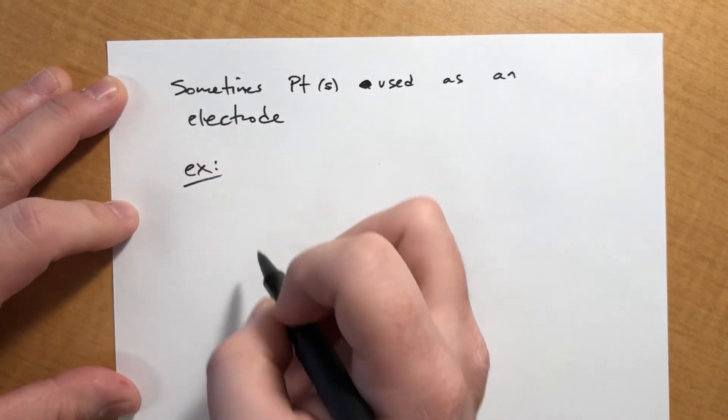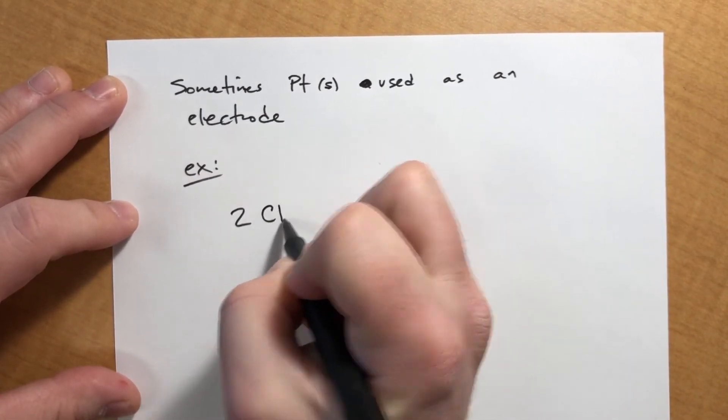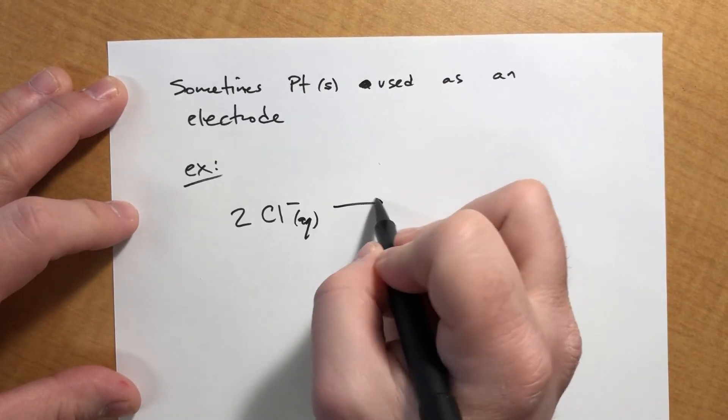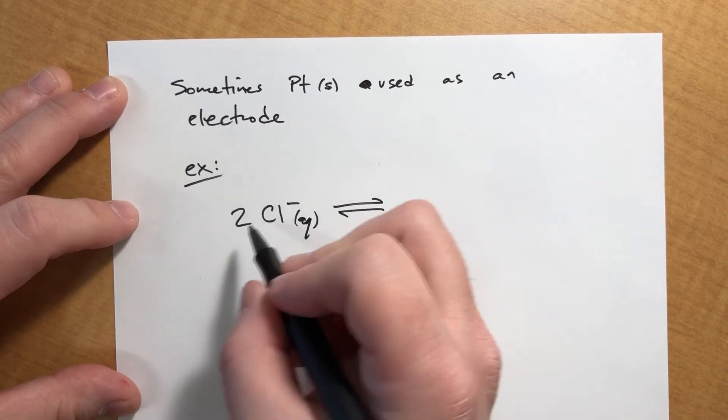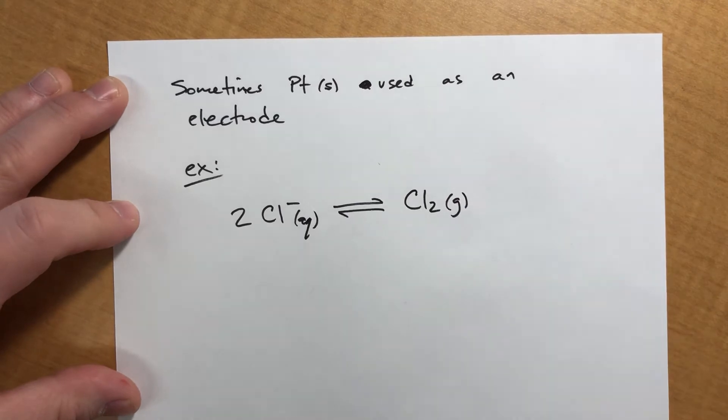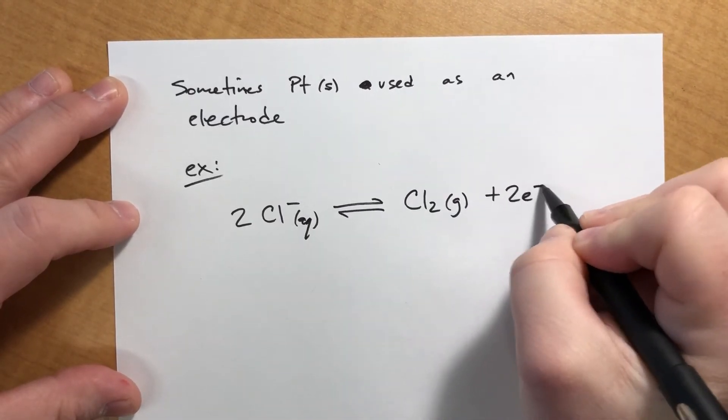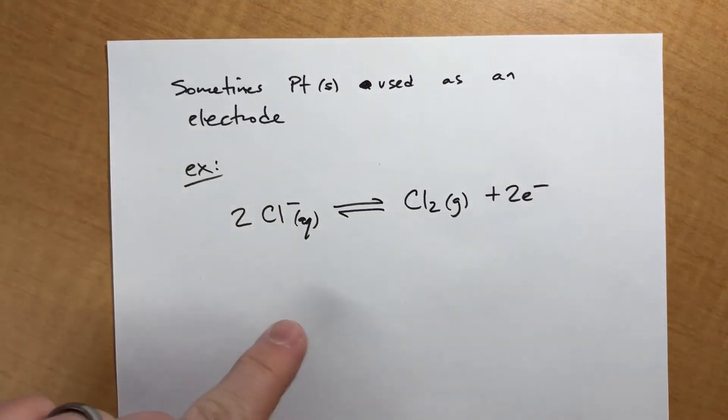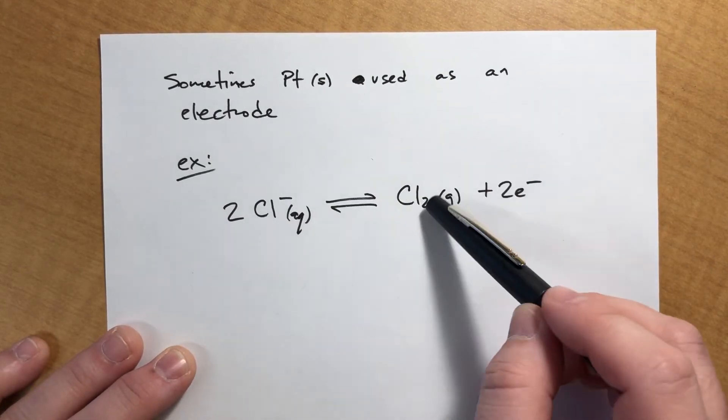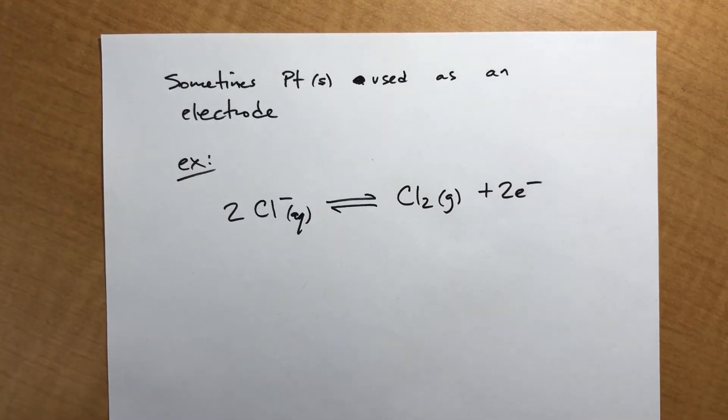You can have chlorine ions, and once it loses some electrons, you form Cl2 gas and two electrons. Electrons are exchanged in this process. It is becoming more positive, so it's an oxidation process, which means we could have it as one of the half reactions.